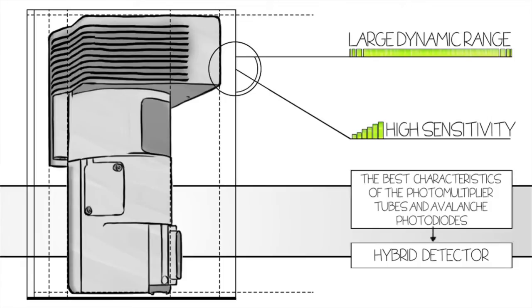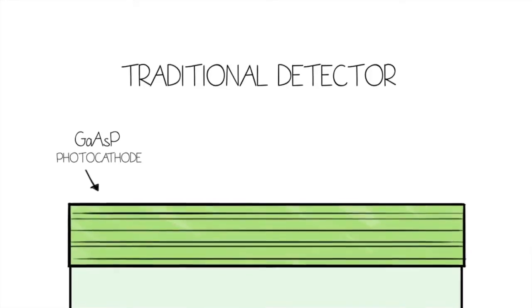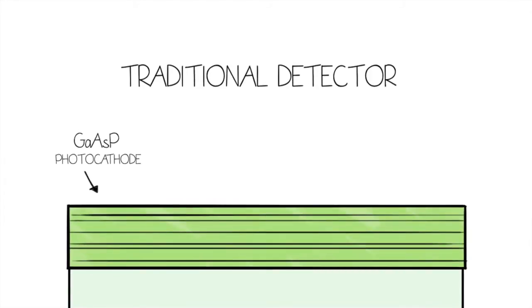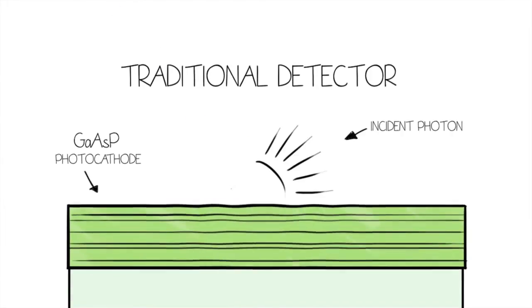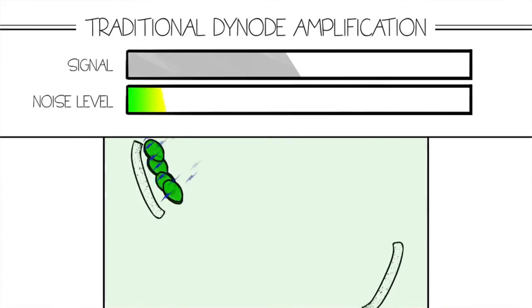Let's take a look at the traditional GaAsP detector, which consists of a photomultiplier tube and a photocathode made of gallium arsenide phosphide alloy. It works by amplifying secondary electrons via a cascade of dynodes. Unfortunately, each amplification step also amplifies noise.